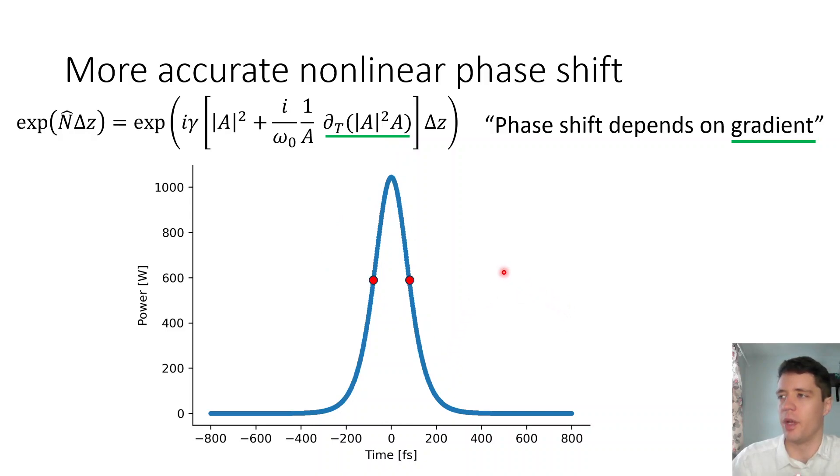So if again we consider these two points right here, we can see they still get a phase shift that's dependent on the local power, which as we saw in an earlier video will lead to a broadening of the spectrum due to self-phase modulation. But we also get another phase shift that's dependent on the gradient in the following way. We can see that these two have different gradients, this one's positive, this one's negative, so these two terms will have different signs in that case.